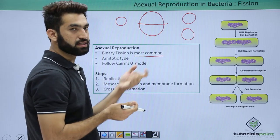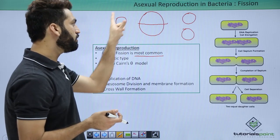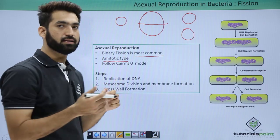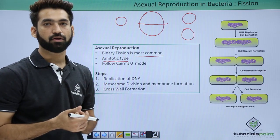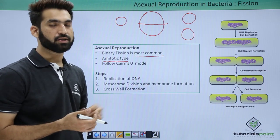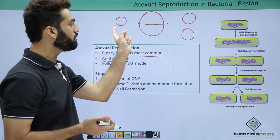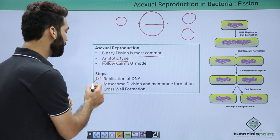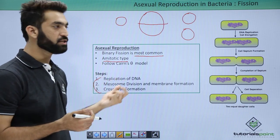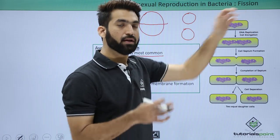Fission is an amitotic type of division — there is no spindle fiber formation, unlike mitosis. Looking at fission in detail, there are three steps involved. The first step is the replication of DNA.